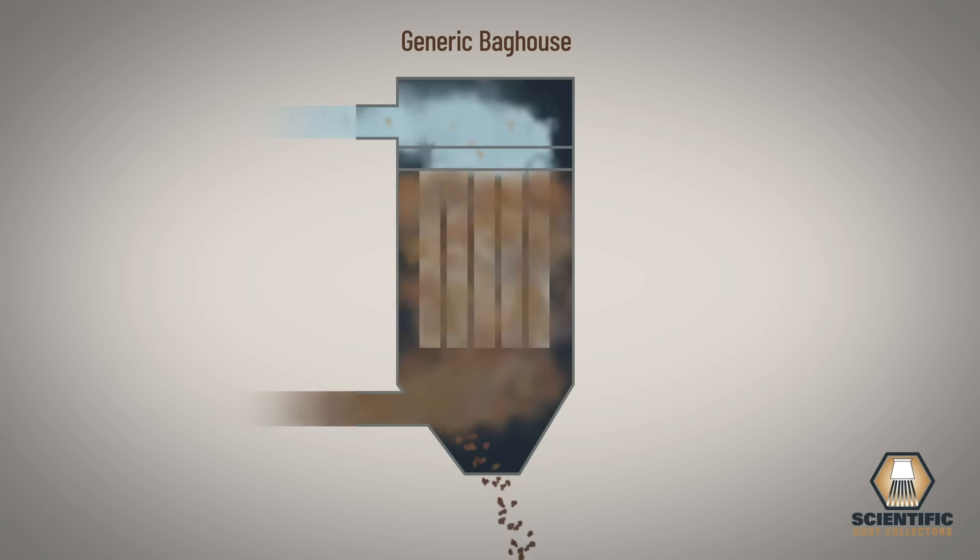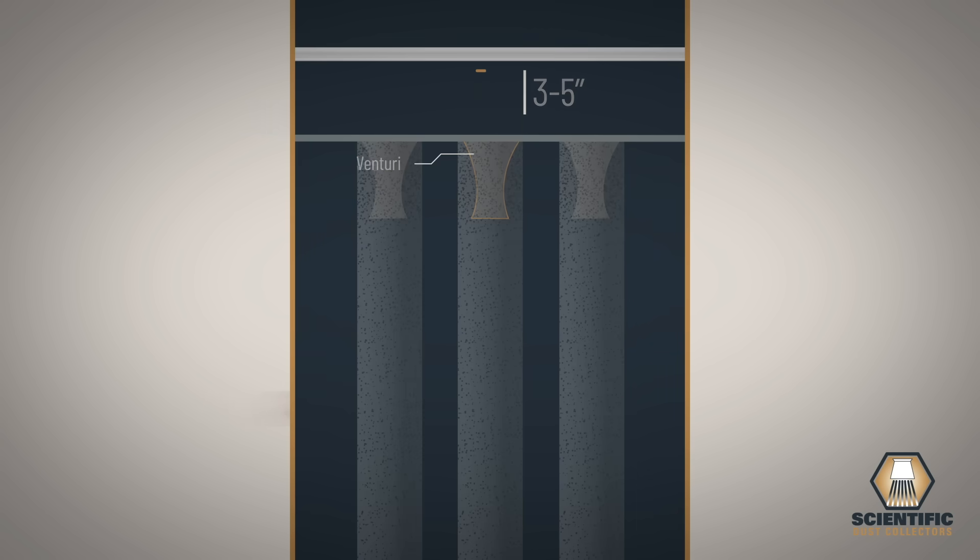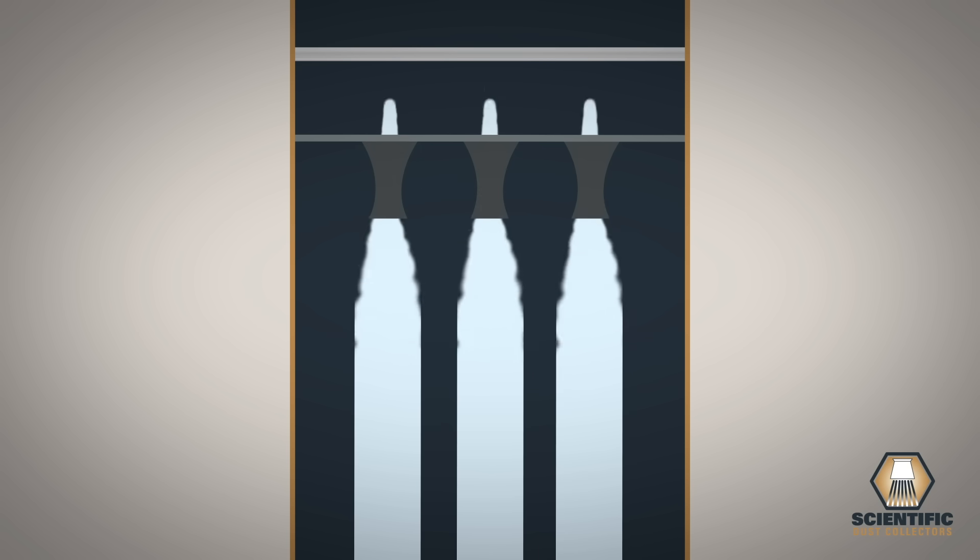The dirty air then passes through the filter media and is exhausted as clean air through the clean air plenum. An orifice located 3 to 5 inches above the Venturi expels a high pressure, low velocity jet of air.